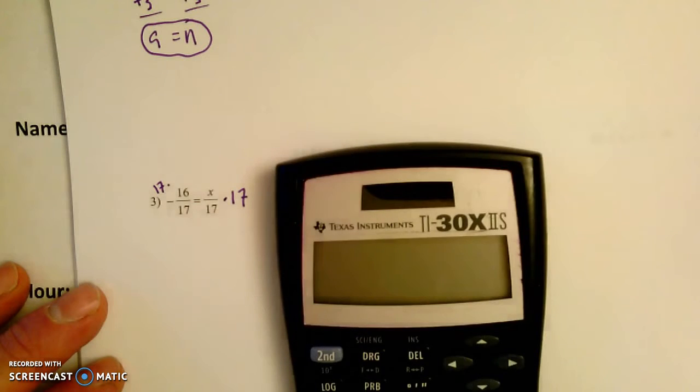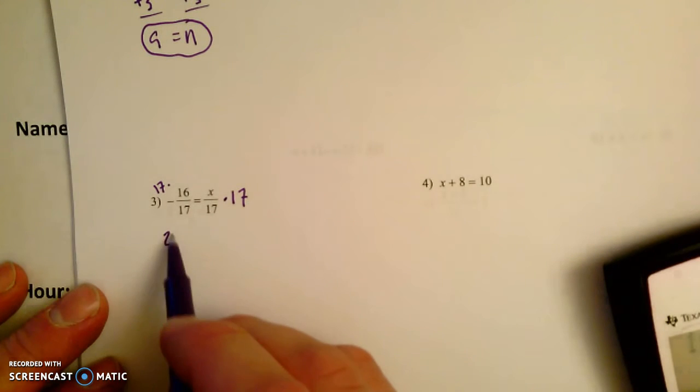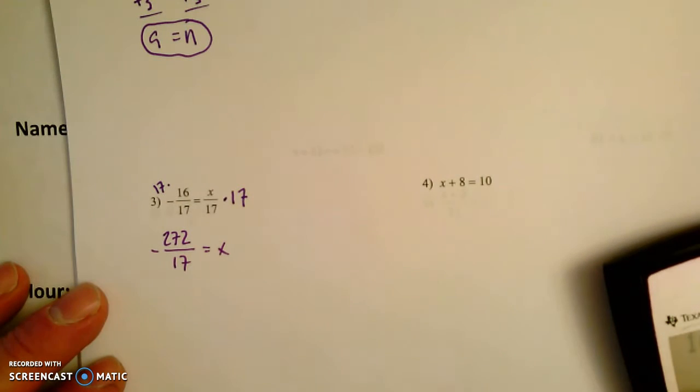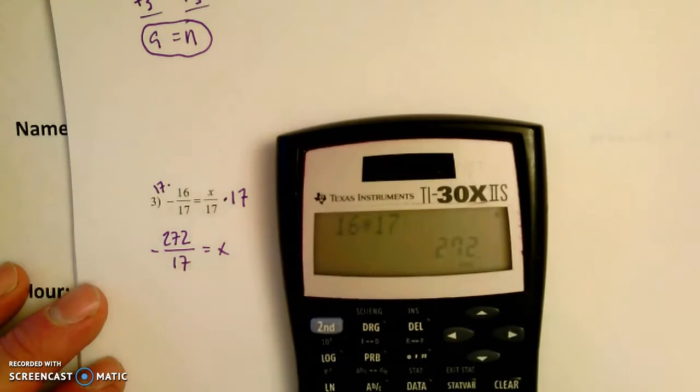So let's get our calculator out here. 16 times 17, 272. 272, still 17ths, still negative by the way, equals x. We could say we're done, but I think we could reduce this fraction.